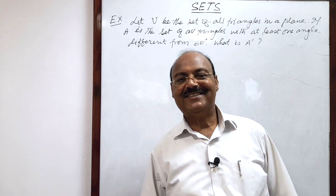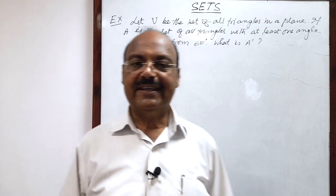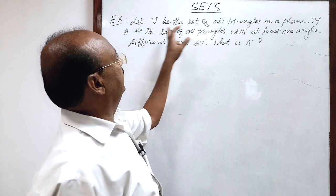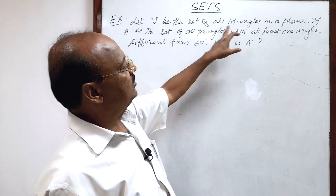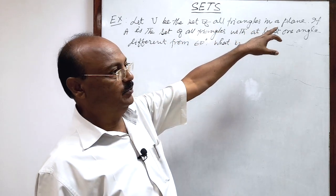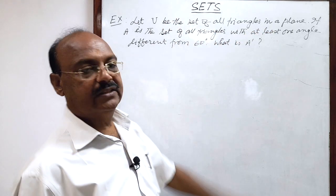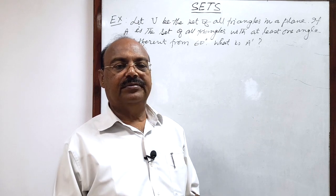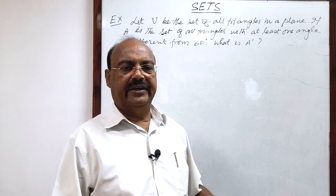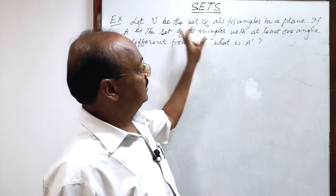Welcome students. Let us see a question from the chapter sets. Here the question is: let U be the set of all triangles in a plane. This is the universal set, which consists of all the triangles — all different types of triangles in the universal set.